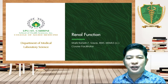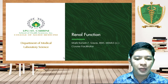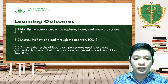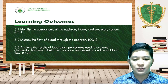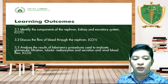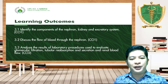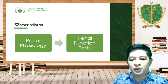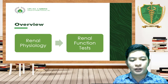Hello future RMTs, welcome to our third lecture. In this lecture we are going to discuss all about renal function. Our learning objectives are: 3.1 identify the components of the nephron, kidney and excretory system; 3.2 discuss the flow of blood through the nephrons; and 3.3 analyze the results of laboratory procedures used to evaluate glomerular filtration, tubular reabsorption and secretion, and renal blood flow. This discussion is divided into two parts: part one focuses on renal physiology anatomy, and part two will focus on the renal function test.